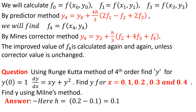We can find the value of f4 once y4 is known, and x4 will also be given. The step size is 0.1, so we calculate the value of f4 or y4 again and again until the corrected value is unchanged — that is the basic procedure. The question uses the Runge-Kutta method of order 4.